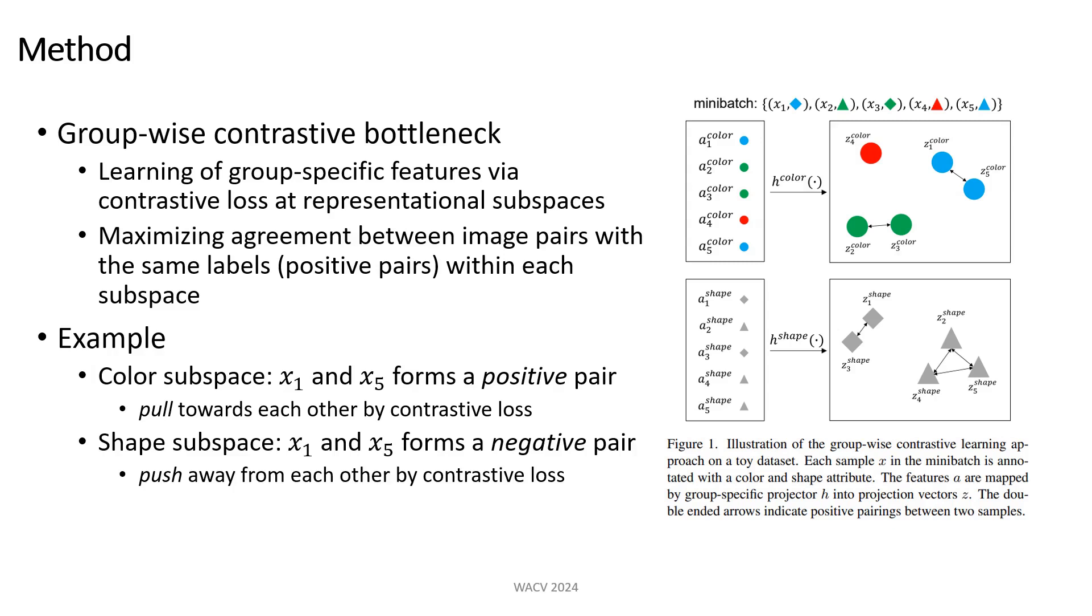However, in the shape subspace, they have different shapes. Hence, they form a negative pair and will be pushed away from each other by the contrastive loss function. We hypothesize that learning to model this relationship in a groupwise manner would lead to a better overall representation.